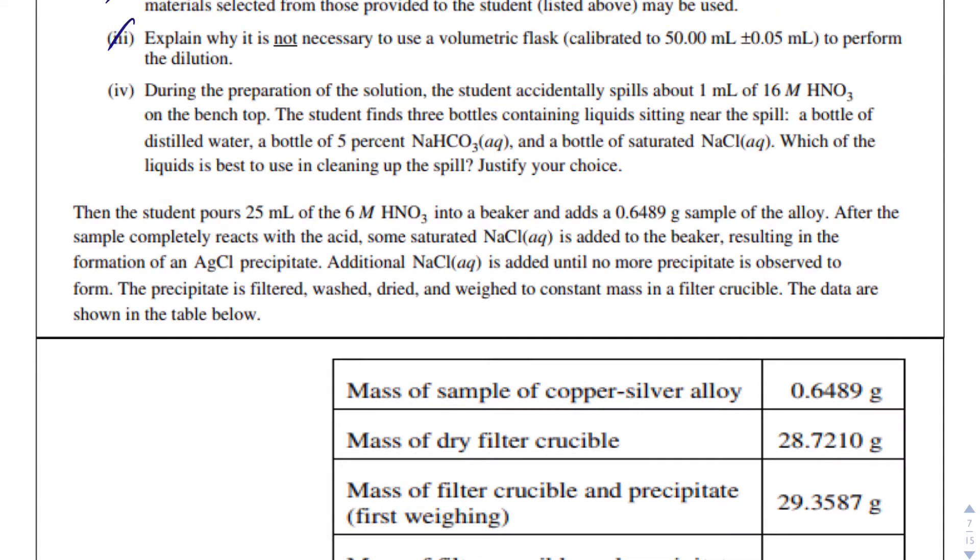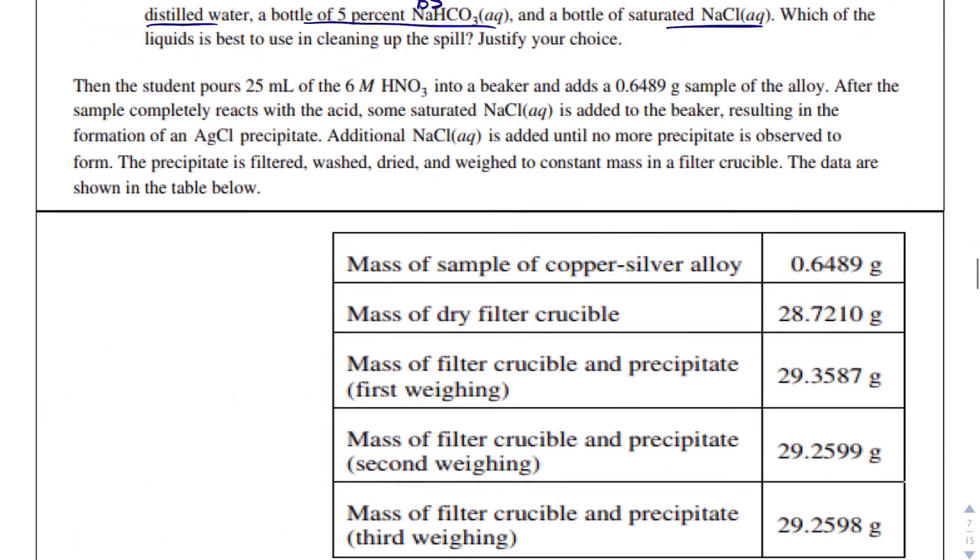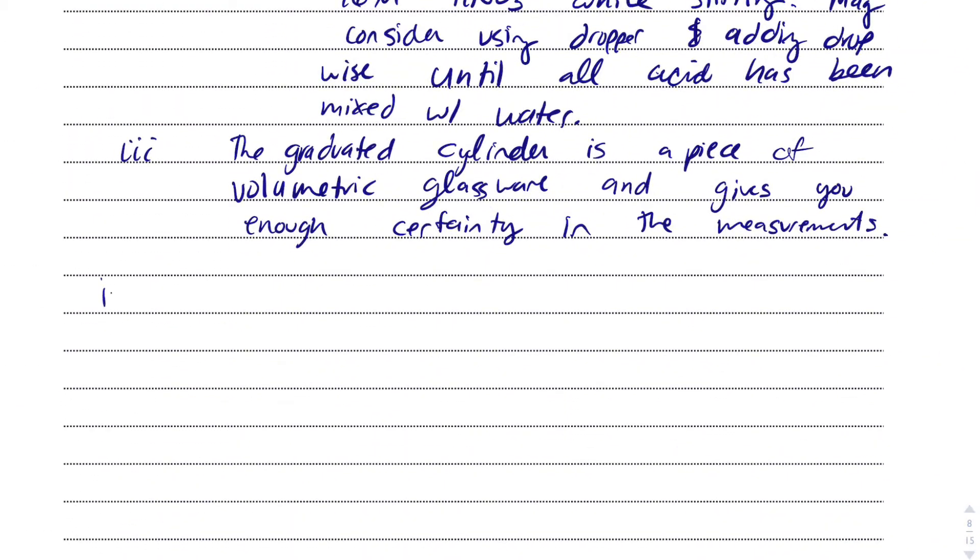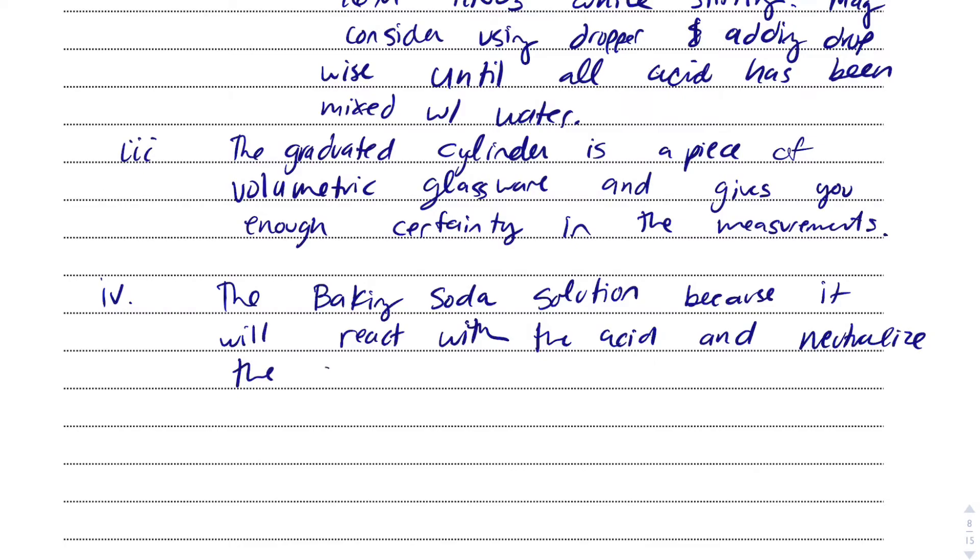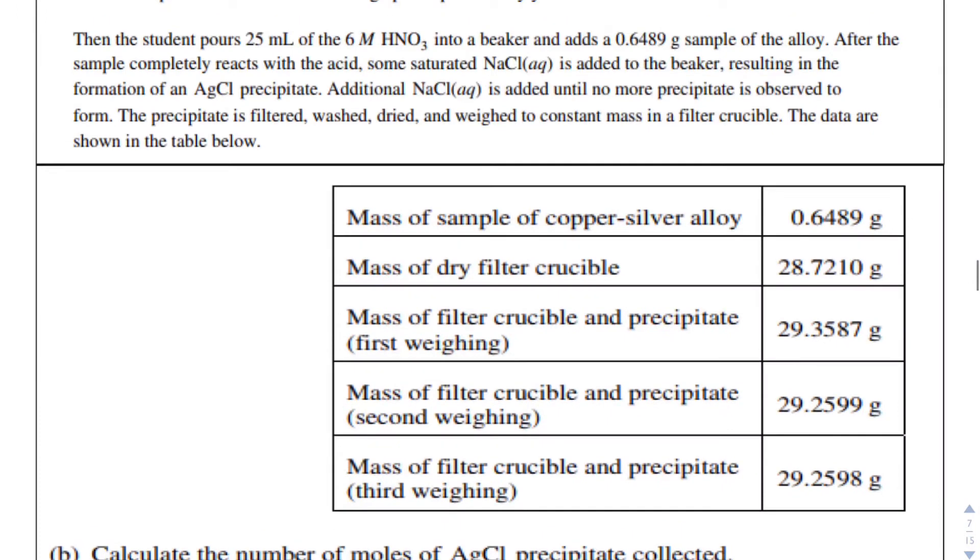Part four says during the preparation of the solution, the student accidentally spills about one milliliter of 16 molar nitric acid on the benchtop. The student finds three bottles containing liquids near the spill: a bottle of distilled water, a bottle of 5% sodium bicarbonate which is baking soda, and a bottle of saturated sodium chloride. Which would be best at cleaning up the spill and justify your choice? One thing to always know in a chemistry lab is the baking soda solution. If you spill an acid, you use baking soda. The reason it's a baking soda solution is because it will react with the acid and neutralize it.